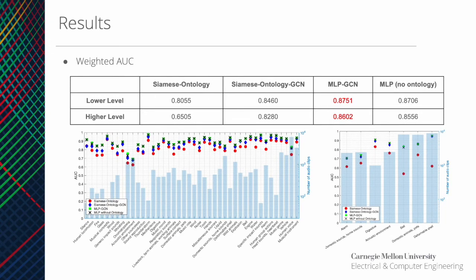Next, we investigate the AUC metric, which measures a classifier's ability to distinguish between classes. We still see a similar trend where the MLP-GCN provides the best results, with slight improvement over the MLP with no ontology information, and the Siamese ontology is consistently worse than those models.